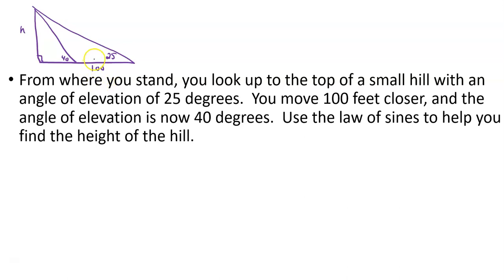So from where I stand, I look up to the top of the hill. Let's use H for hill. Angle of elevation is 25 degrees. I move a hundred feet closer and the angle of elevation is now 40 degrees. Use the law of sines to help you find the height of the hill. How do we do this? Well, the first thing is we need a variable to represent that distance that's in between here. So I don't know, let's call it P for missing piece. And now I can fill in a couple of other angle measures. If this thing down here is 40, then this thing over here is 140 because I have to add up to 180. And now add the 140 plus 25, I get 165 subtracted from 180. I get 15. So 15 degrees is that little angle up there.